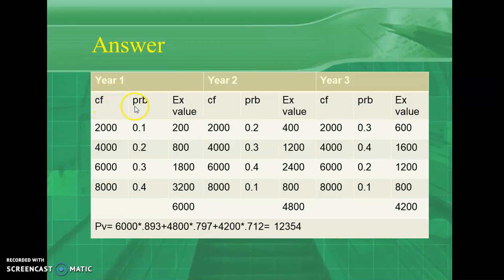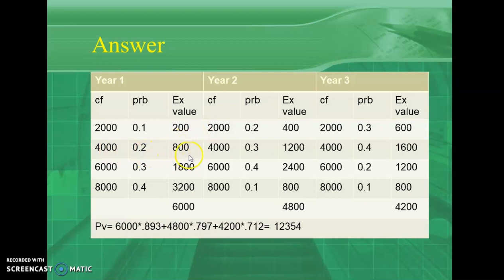For Year 1, write the cash flow and probability in respective columns. Cash flow 2000, probability 0.1; 4000, 0.2; 6000, 0.3; 8000, 0.4. When you multiply the cash flow with probability, you get the expected value: 2000 × 0.1 = 200; 4000 × 0.2 = 800; 6000 × 0.3 = 1800; 8000 × 0.4 = 3200. The sum gives the total expected cash flow for Year 1, which is 6000.